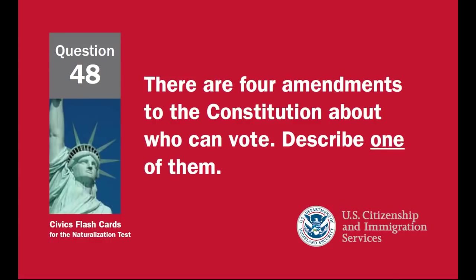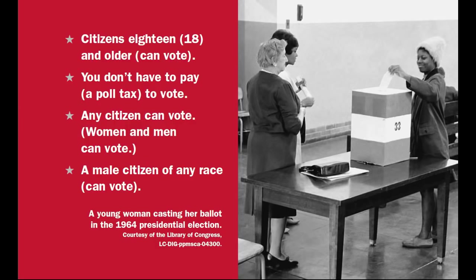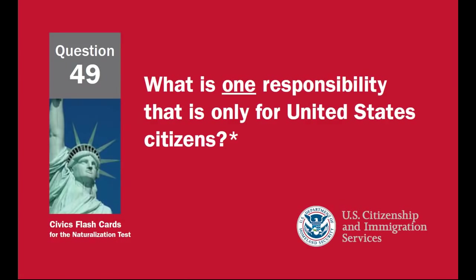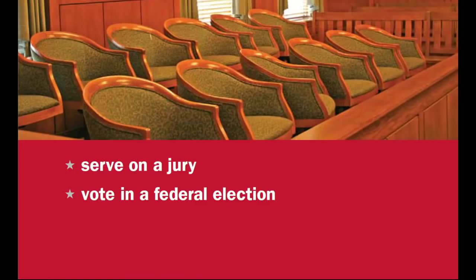There are four amendments to the Constitution about who can vote. Describe one of them: Citizens 18 and older can vote. You don't have to pay a poll tax to vote. Any citizen can vote. Women and men can vote. A male citizen of any race can vote. What is one responsibility that is only for United States citizens? Serve on a jury. Vote in a federal election.